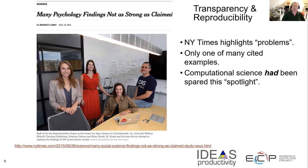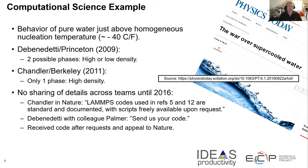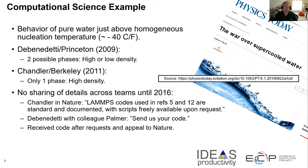This is really one of the high-level motivations why scientific credibility and reproducibility are important. It also comes at a deeper level to our individual science. This example comes from the physics or chemistry world, looking at the behavior of water just above the nucleation temperature. There were two studies — one done in 2009 that found two possible phases: either a high-density phase or a low-density phase. Then another study in 2011 said there's only one phase, just the high-density phase. There's a scientific difference here, and this is all computationally based.